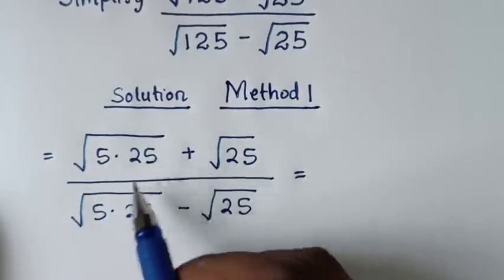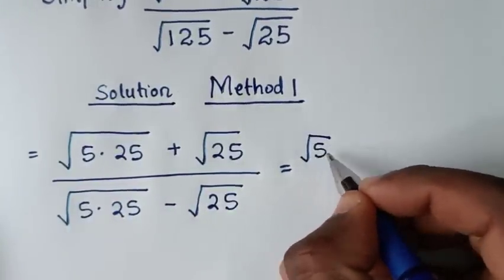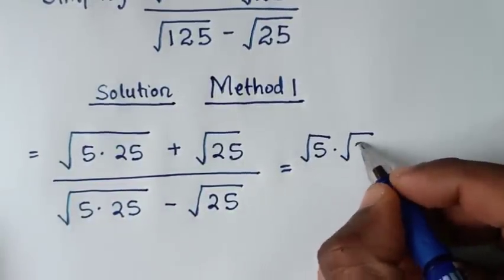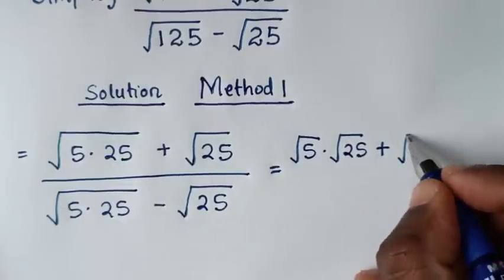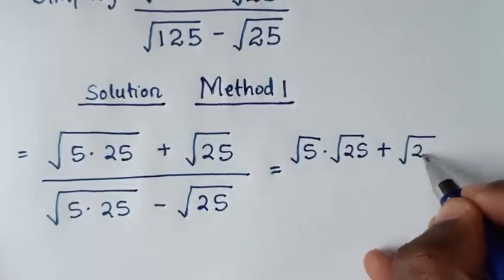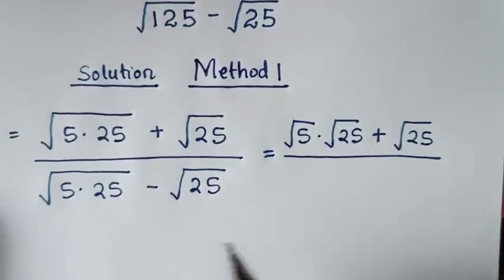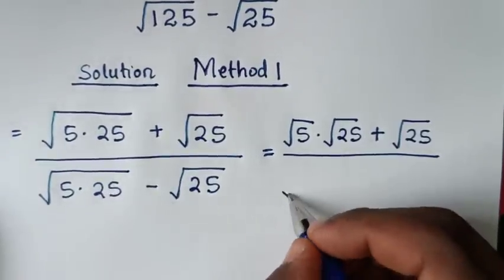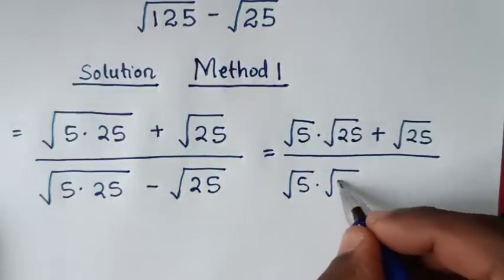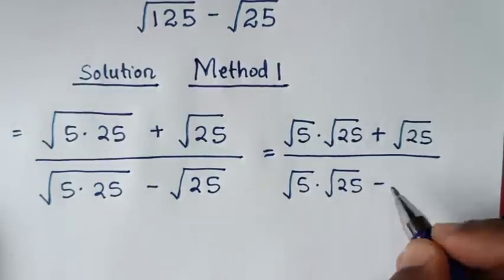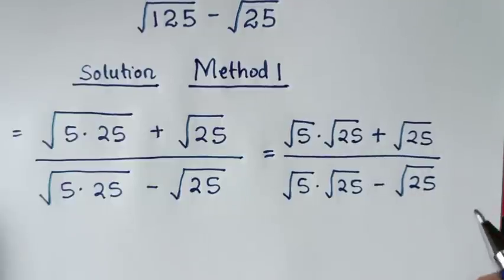We separate the radicals, so the numerator becomes square root of 5 times square root of 25 plus square root of 25, and the denominator becomes square root of 5 times square root of 25 minus square root of 25.